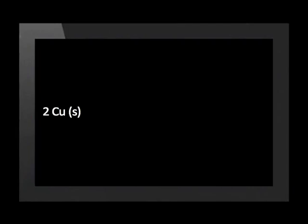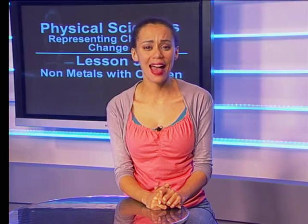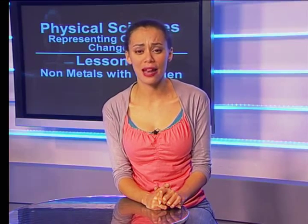The balanced equation with phases is: 2Cu(s) + O2(g) → 2CuO(s). By now, however, you should be able to balance chemical equations by inspection.